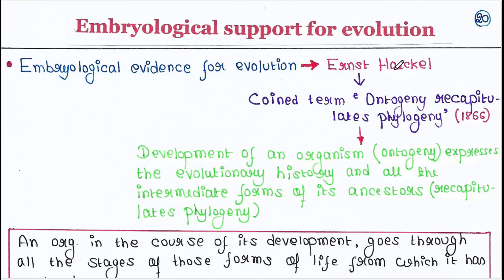Ernest Haeckel suggested that there is embryological evidence for evolution. He coined the term 'Ontogeny recapitulates phylogeny' in 1866. It states that the development of an organism, called Ontogeny, expresses the evolutionary history and all the intermediate forms of its ancestors, called recapitulates phylogeny.